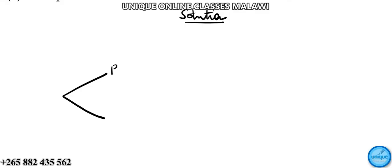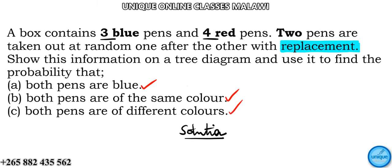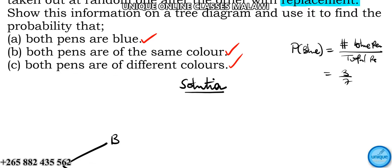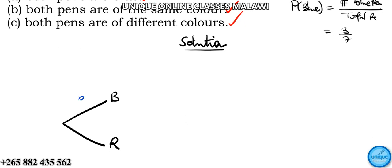We have blue pens and red pens, total of 7. Probability of picking blue pens is the total number of blue pens divided by total pens in the box. Number of blue pens is 3, total is 7. So we're putting here 3 over 7. This branch is 4 over 7.